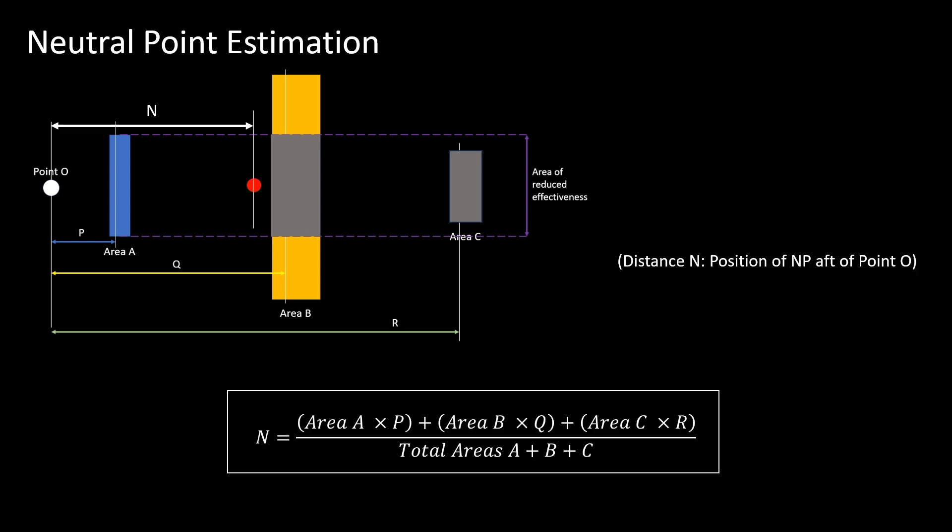Use the formula to calculate the neutral point location from point O. The CG can then be determined based on your static margin.